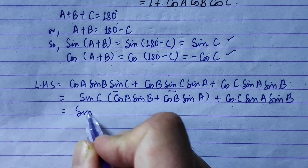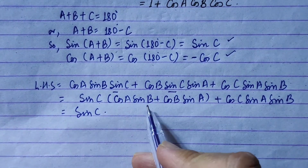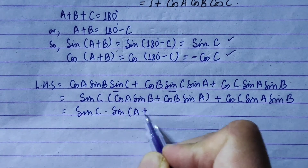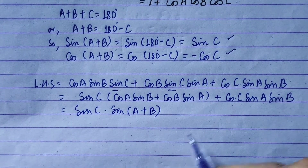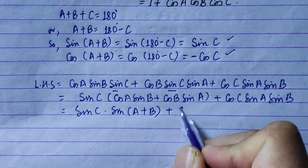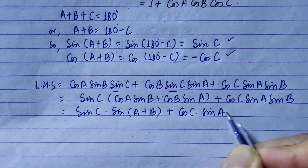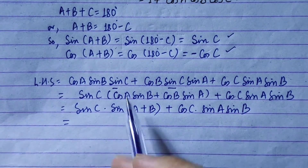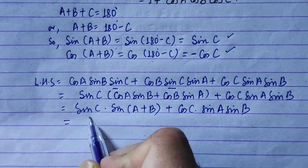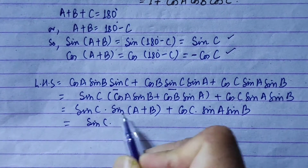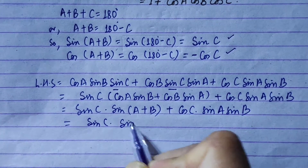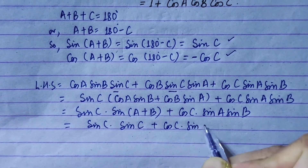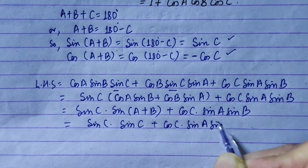The formula gives sin(b plus a), or sin(a plus b). So we get sin(a plus b) plus cos c sin a sin b. And since sin(a plus b) equals sin c, we substitute that in.